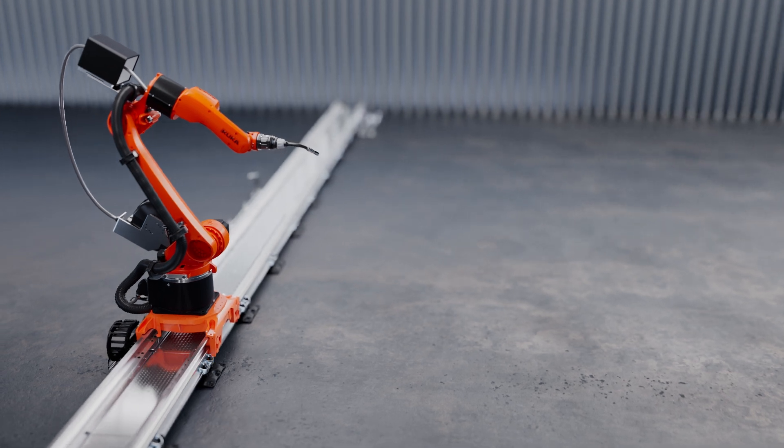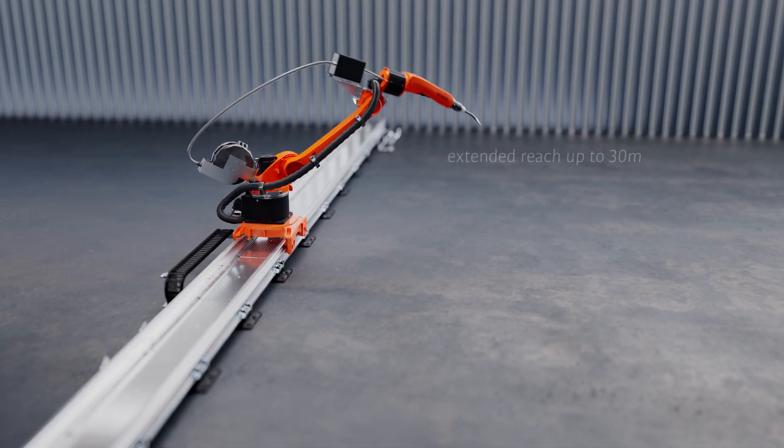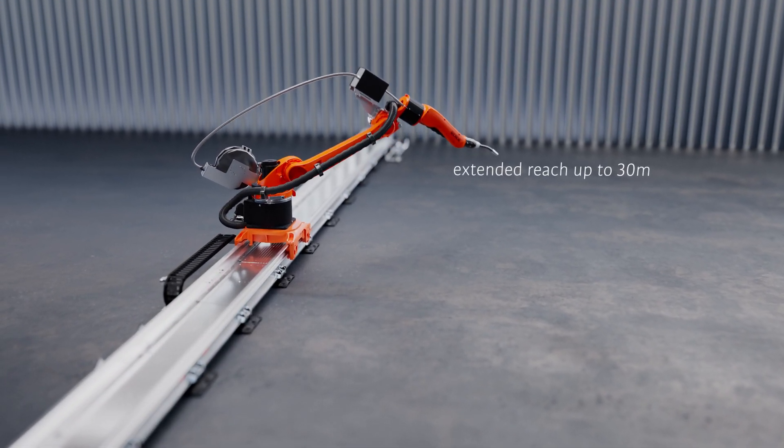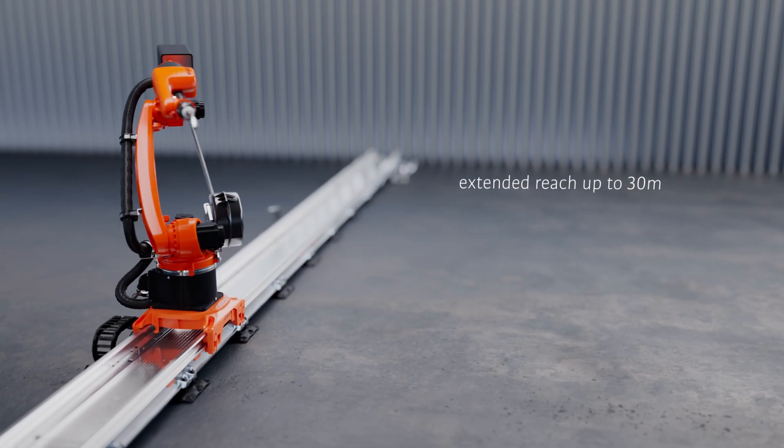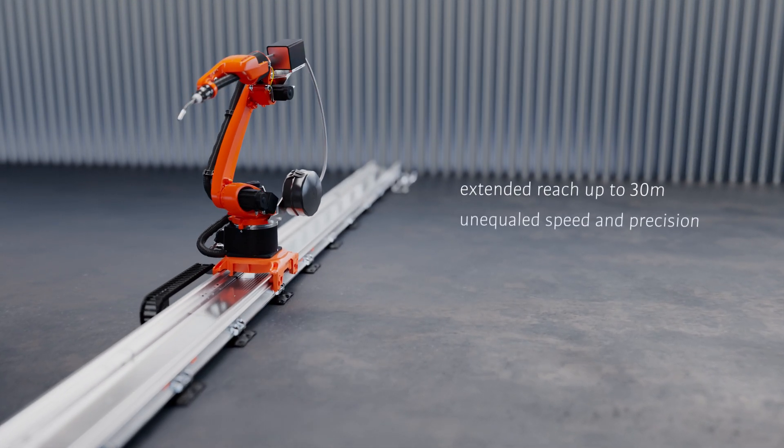Our flexible linear tracks extend your robotic system's reach up to 30 meters to enlarge the work envelope of the robot. Seamlessly integrated into the robot control, they provide unequaled speed and precision.